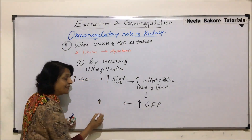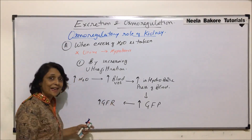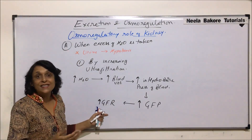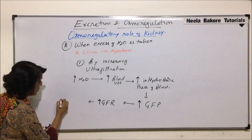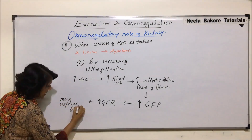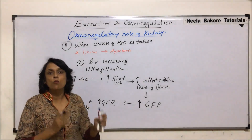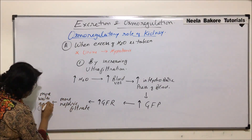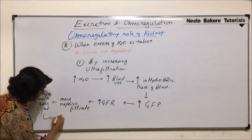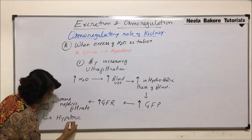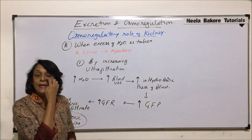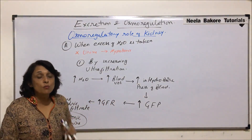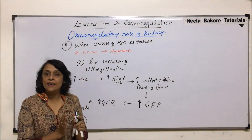Because of this increase in pressure, there is an increased glomerular filtration rate. The normal GFR was 125 mL per minute, so this rate would increase, meaning more and more nephric filtrate would be formed. More nephric filtrate means more water is thrown out of the body, resulting in hypotonic urine. So by increasing ultrafiltration, that excess of water has been removed.